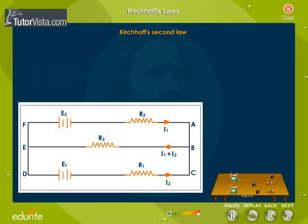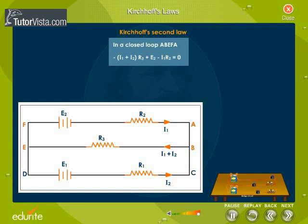Consider the circuit shown here. In a closed loop ABEFA: -(I₁ + I₂)R₃ + E₂ - I₁R₂ = 0. In the loop CBEDC: -(I₁ + I₂)R₃ + E₁ - I₂R₁ = 0.